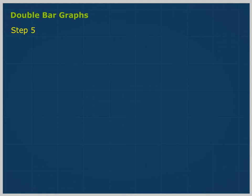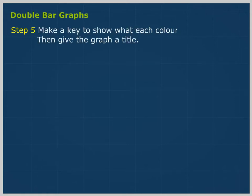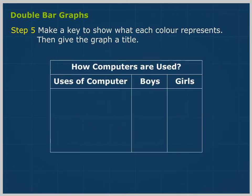Step 5: Make a key to show what each color represents. Then give the graph a title: 'How Computers Are Used — Users of Computer.'